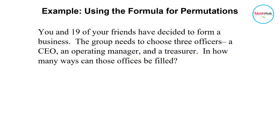Now in this problem here, it is implied that a person cannot be a CEO at the same time an operating manager and at the same time a treasurer. So it cannot also be that an operating manager is also the treasurer. Since we need three different people to fill in each of the offices, therefore this problem is a problem for permutation.